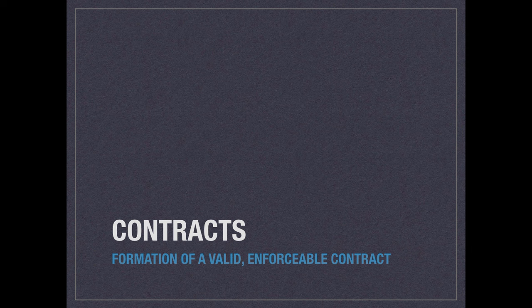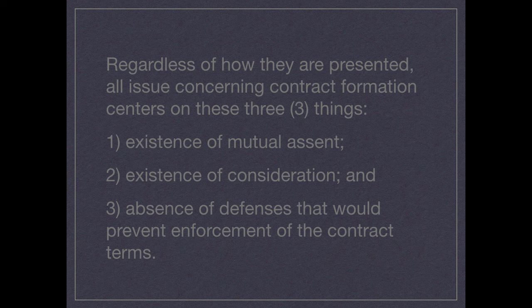Hi everybody. Today we're going to talk about the formation of valid contracts. Whenever a contract is being formed and you want to determine whether or not that contract is valid, you need to focus on three things: Was there mutual consent? Was there consideration? And was there an absence of defenses that would otherwise prevent enforcement of our contract? This slideshow is going to go over one and two. The absence of defenses will be covered in a separate slideshow.